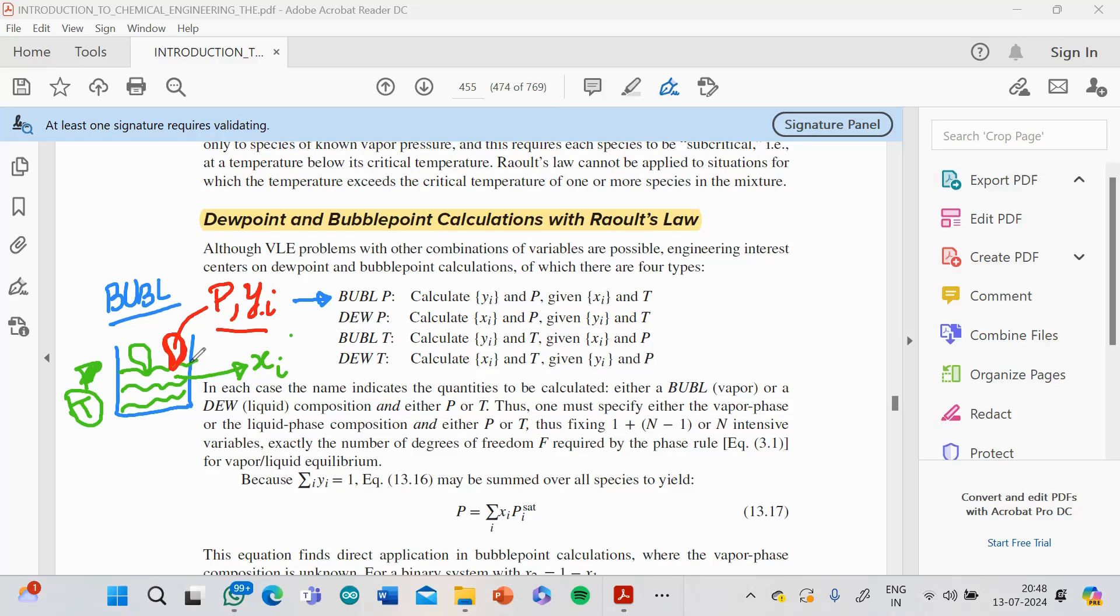Now the reverse: if I know the pressure and Xi, what I am calculating—again I have the bubble here—what is the temperature at which this bubble formation took place? And when we say it's a bubble, it's a bubble of vapor, so there again I would like to understand the composition of the vapor. So I am finding now T versus Yi.